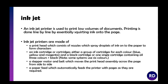An inkjet printer is used to print low volumes of documents. It works line by line, putting ink on the page — that's why if you pull the page out while it's still warm and put it in a pile, it might smudge. Inkjet printers have a printhead with nozzles that spray droplets of ink onto the paper to form letters. They have ink cartridges — cyan, yellow, and magenta, or black — and some systems use up to 6 colours. A motor and belt moves the printhead across the page, and a paper feed automatically feeds pages as required.